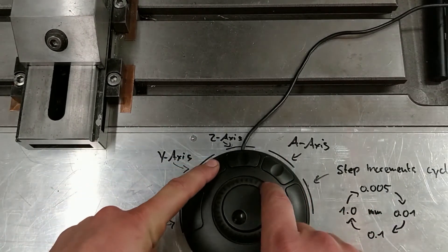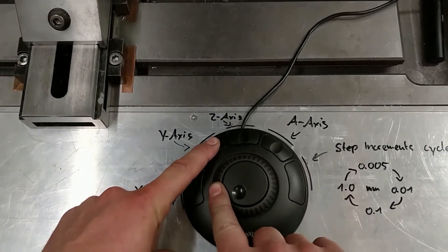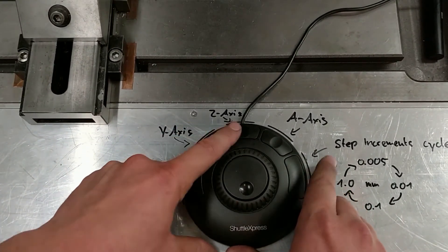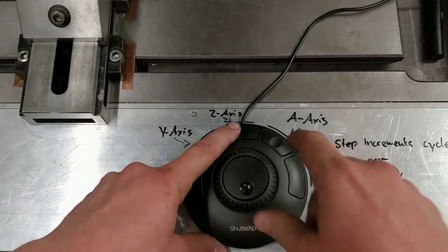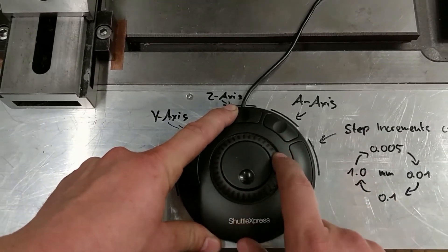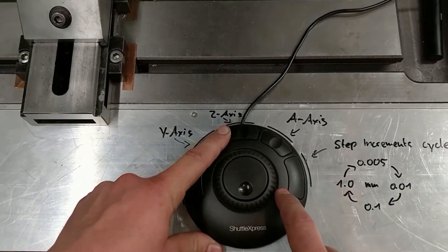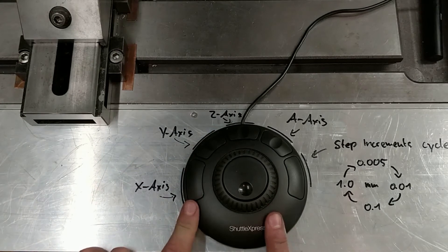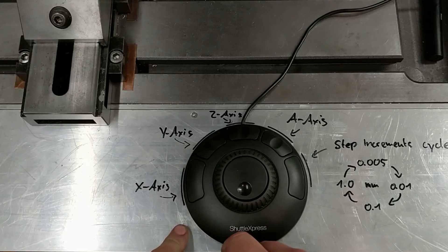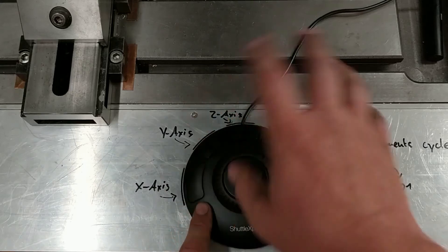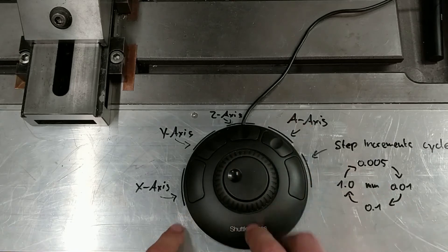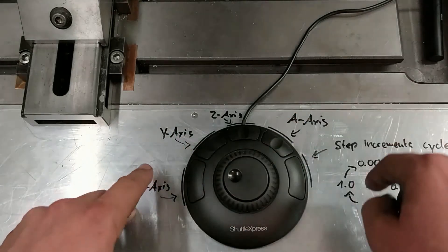This works for every axis the same way. By the way, the camera is mounted to the head of my milling machine, so I can zoom in and out. And that's basically the same way as the inner ring works. But the outer ring is for continuous jogging around and the inner wheel is to move step by step.